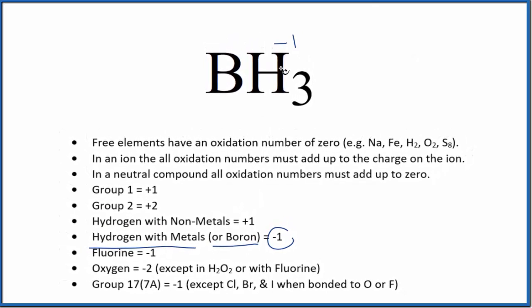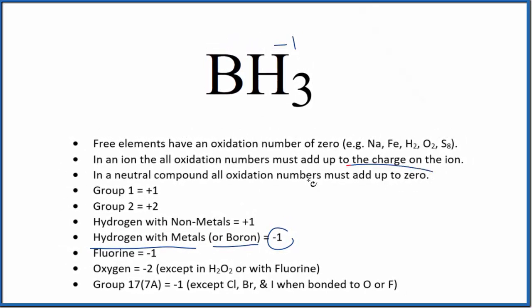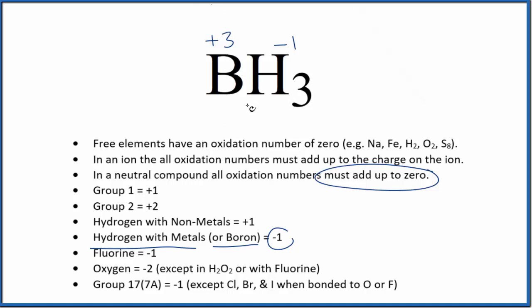We have three hydrogens. In order for all the oxidation numbers to add up to zero, three times negative one is negative three. So boron has to be a positive three. The oxidation state of boron in BH₃ is plus three — a little bit of a tricky one.